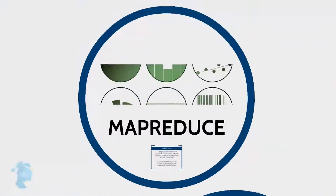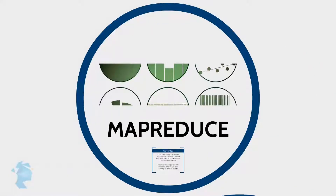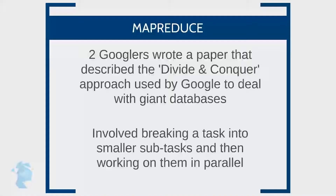To understand the beginning of big data technology, we need to go back to 2004, when two Googlers — Sanjay Ghemawat and Jeffrey Dean — wrote a paper describing how Google used the divide-and-conquer approach to deal with its gigantic databases. This approach involves breaking a task into smaller sub-tasks and then working on those sub-tasks in parallel, which is extremely efficient. They called this approach MapReduce.